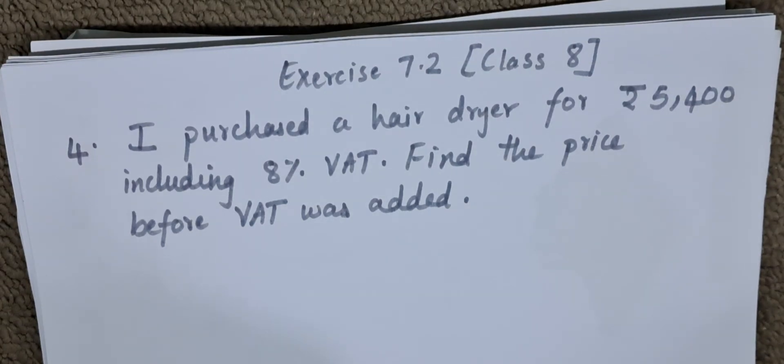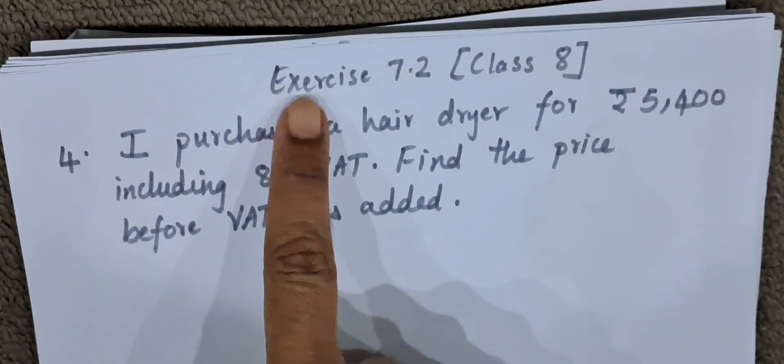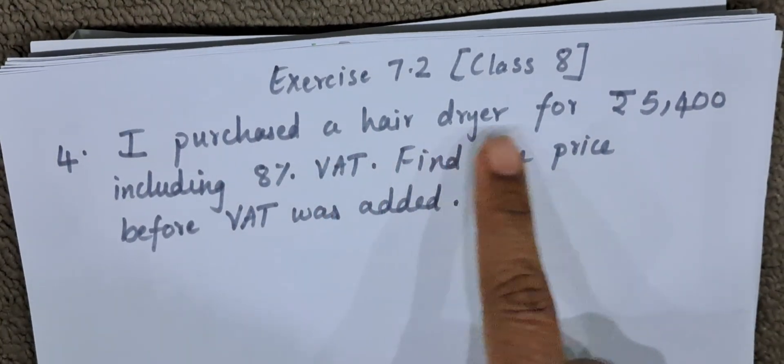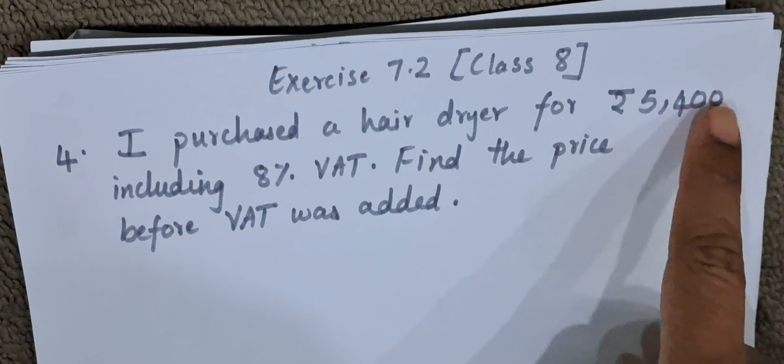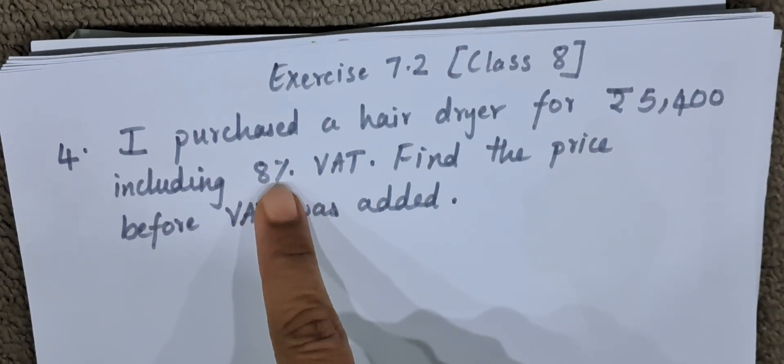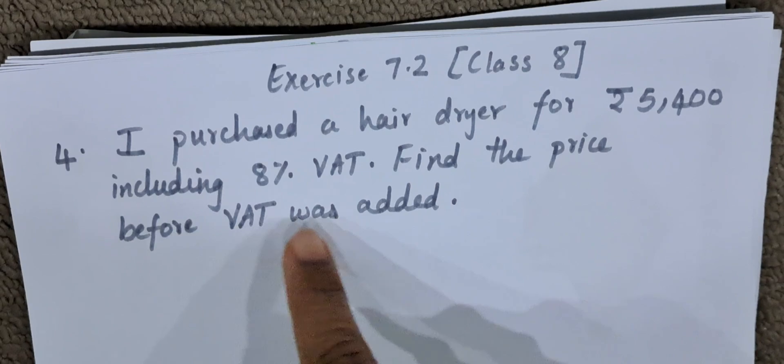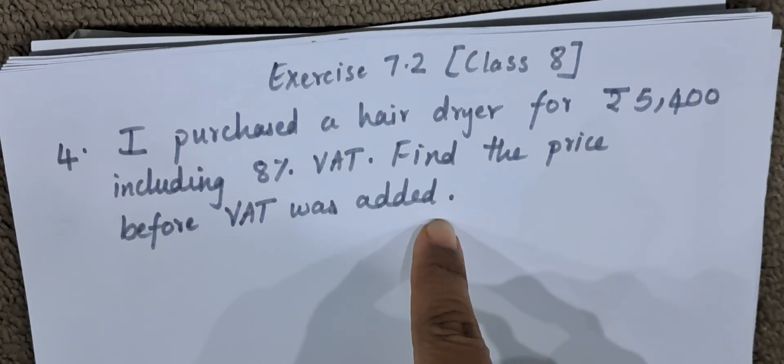Hello everyone, today we are going to do question number 4 of exercise 7.2 class 8. The question goes like this: I purchased a hair dryer for rupees 5,400 including 8% VAT. Find the price before VAT was added.